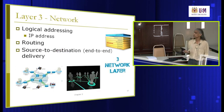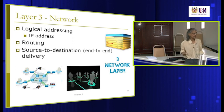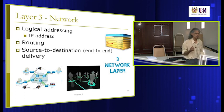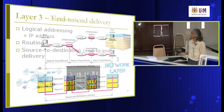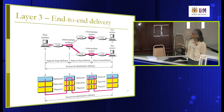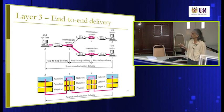Layer 3 is responsible for source-to-destination, end-to-end delivery. As demonstrated in a simple experiment, it uses IP addresses to identify the destination, and of course there is routing. Layer 3 on machine A inserts the IP addresses to make sure data is received by the destination. Layer 2 is responsible only between links; layer 3 is responsible all the way from source to destination.